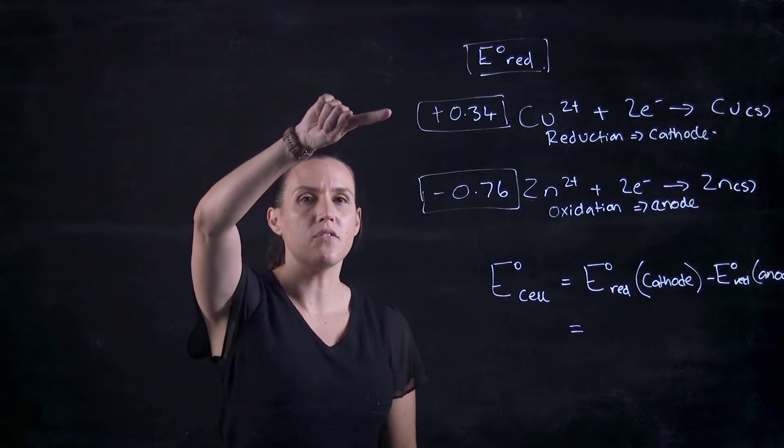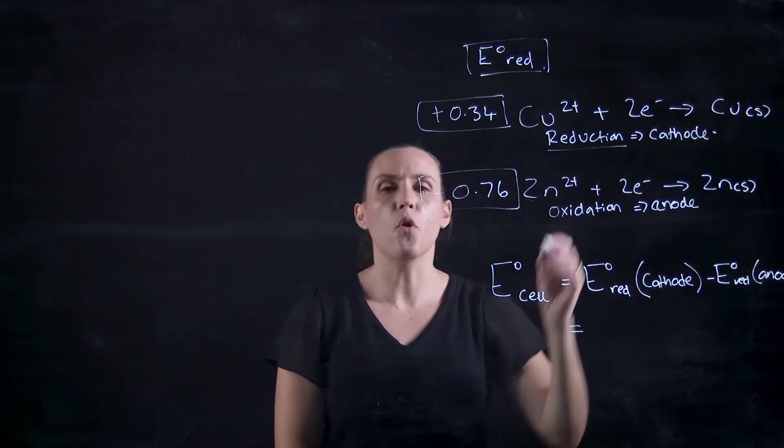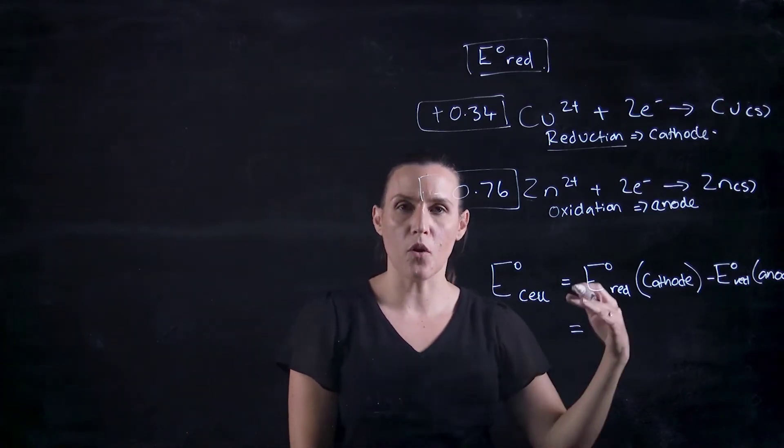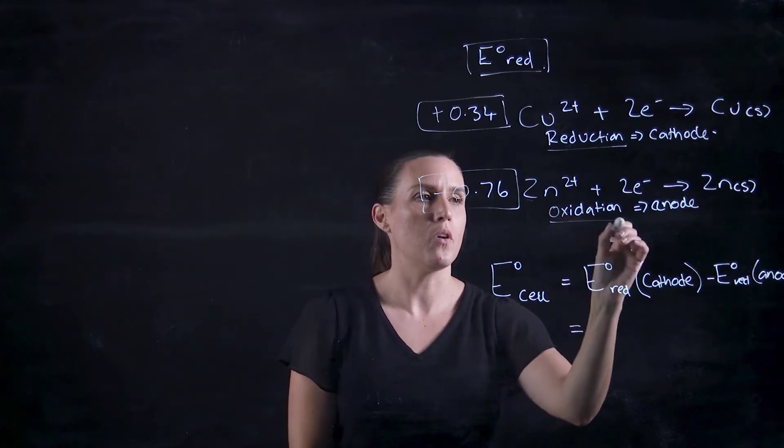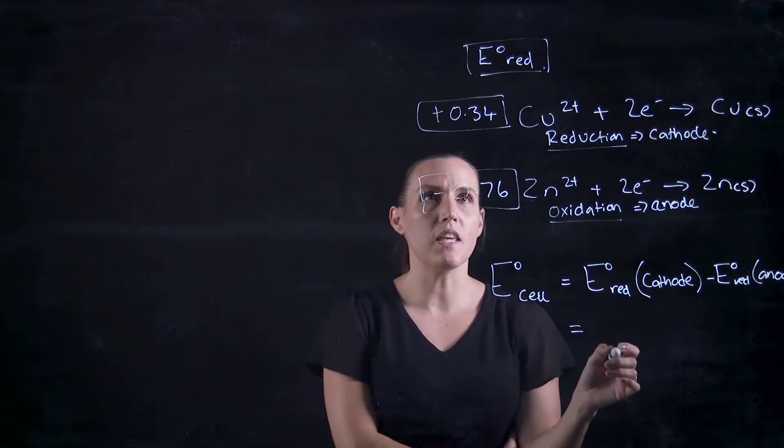The more positive the E naught of the reduction reaction, the more it's able to act as the cathode and do the reduction reaction. The more negative it is, the opposite - so it would be the oxidation or the anode.